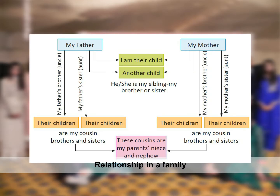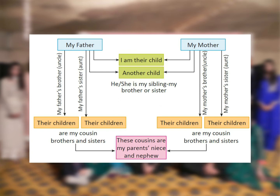Relationships in a Family. My father, my mother, my father's brother is my uncle, my father's sister is my aunt. Their children are my cousins — brothers and sisters.